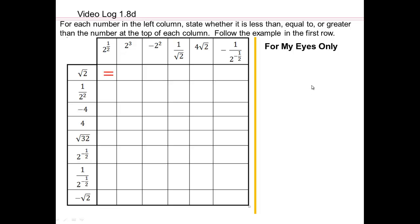Let's take a look at this. So let's go back in For My Eyes Only column. So 2 cubed is 8. And square root 2, we already saw, is 1 point something. So square root 2 is smaller than 2. Which means that square root 2 is smaller than 8. So that's why they're less than.